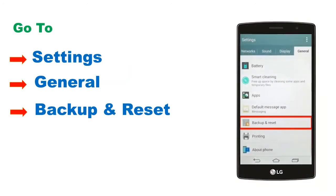Click on the Settings app from the home screen. You can see the Backup and Reset option under the Personal or General tab. Now click on Backup and Reset option.